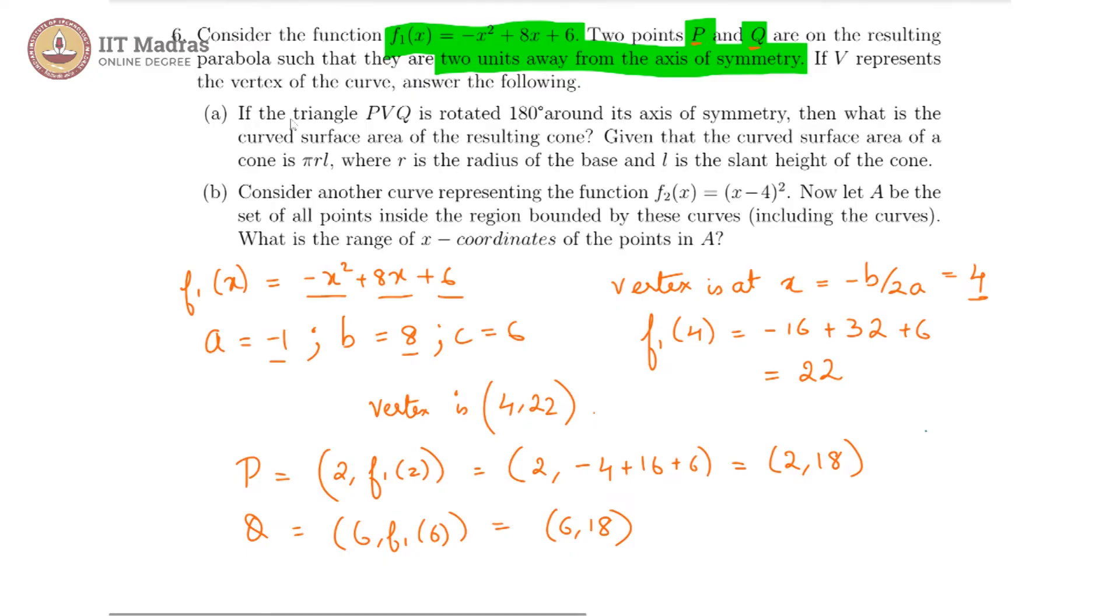And it is now told to us that the triangle pvq is rotated 180 degrees about its axis of symmetry, and we are being asked the curved surface area of the resulting cone. So let us look at what this looks like.